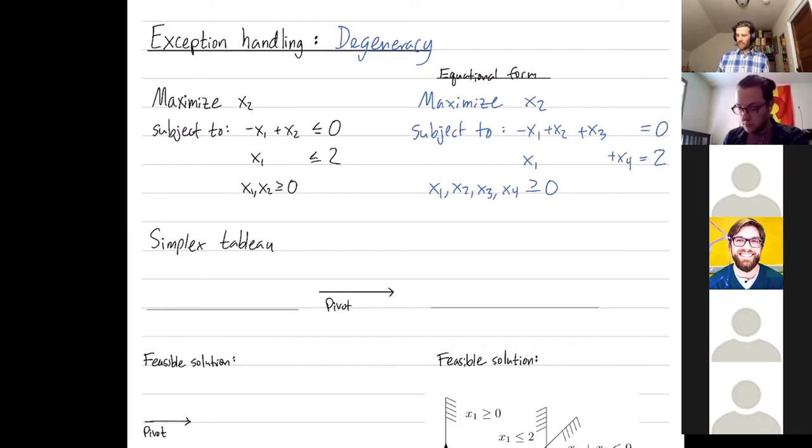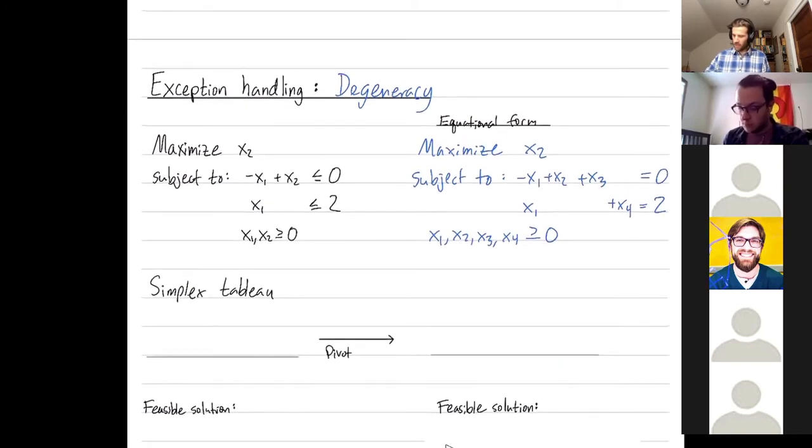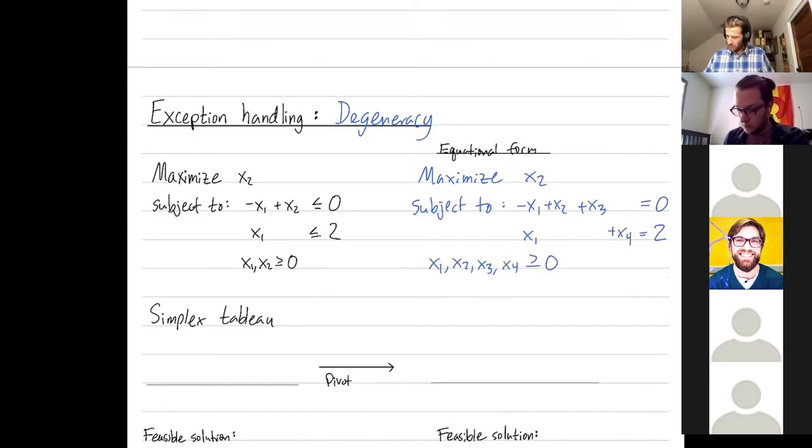Once you're in equational form, you can put it in the simplex tableau. We see in the corresponding matrix that these two columns for x3 and x4 are linearly independent. The matrix that we're looking at is negative 1, 1, 1, 0, and 1, 0, 0, 1. These are the coefficients coming from here. And these two columns for x3 and x4 are linearly independent, so let's make those our first feasible basis.